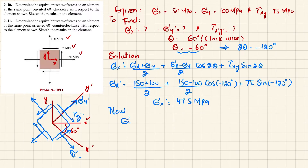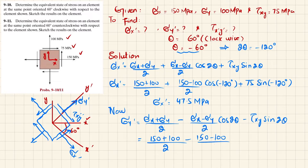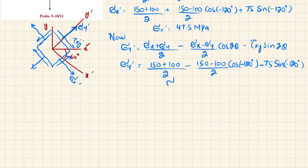Now find sigma y dash. The formula is: sigma y dash = (sigma x + sigma y)/2 − (sigma x − sigma y)/2 · cos(2θ) − tau xy · sin(2θ). Substituting: (150 + 100)/2 − (150 − 100)/2 · cos(−120°) − 75 · sin(−120°). Sigma y dash comes out to be 202 megapascal.